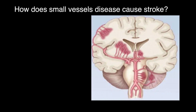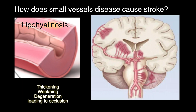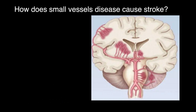How does small vessel disease cause stroke? The main process is called lipohyalinosis. This process is characterized by thickening, weakening, and degeneration of the small vessels, eventually leading to vessel occlusion. Once the vessel is occluded, the area that this vessel supplies will die, leading to small vessel stroke.